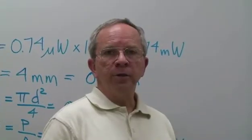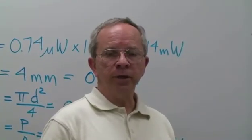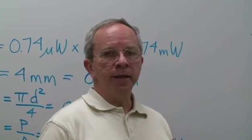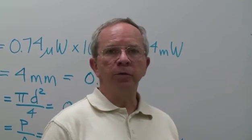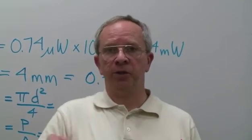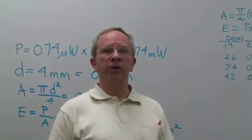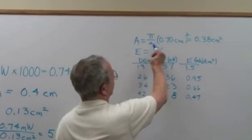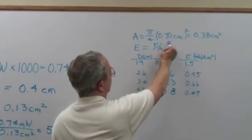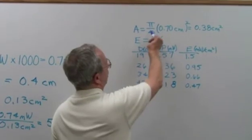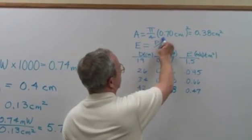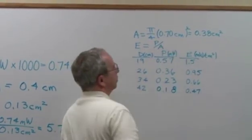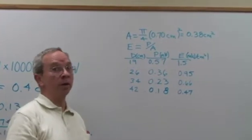So now that we've made our measurements for power at these different distances, we can fill in that data table and do some calculations for the irradiance of the different positions of the detector. The area calculations for this detector use the area of the detector, pi divided by four times the diameter of that detector, which is 0.7 centimeters, which gives an area of 0.38 centimeters squared.